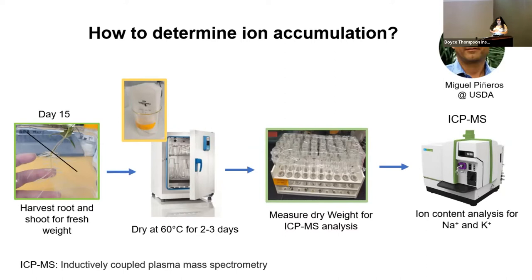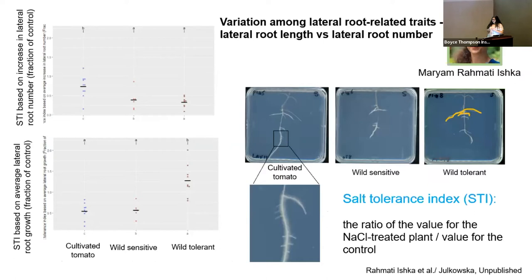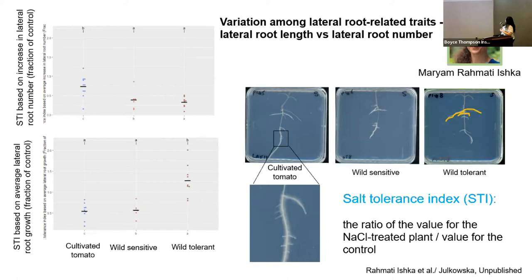From the previous 230 accessions screened, three accessions were chosen. We have our cultivated tomatoes and two accessions with contrasting traits related to salt stress — one wild-sensitive, shown to be sensitive to salt stress, and one wild-tolerant, shown to be tolerant to salt stress. My mentor Miriam studied the salt-tolerant index, or STI, which is the ratio of the value for sodium chloride-treated plants over the value for the control, and she found interesting data regarding these two accessions.